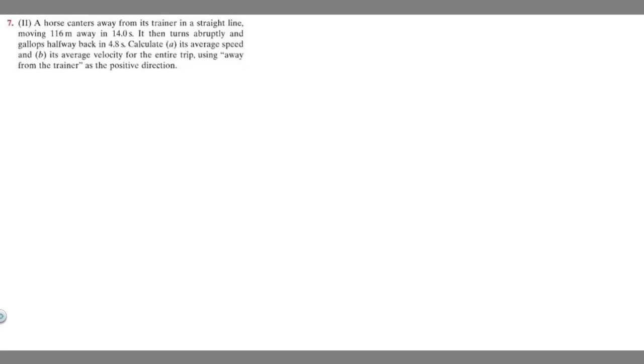In this problem we're told a horse canters away from its trainer in a straight line, moving 160 meters away in 14 seconds. It then turns abruptly and gallops halfway back in 4.8 seconds. Calculate A, its average speed, and B, its average velocity for the entire trip, using away from the trainer as a positive direction.